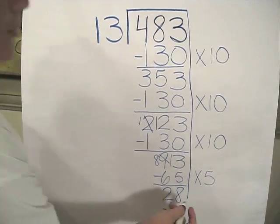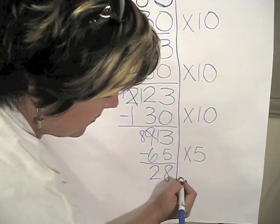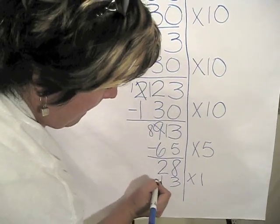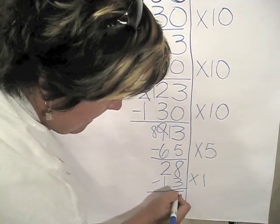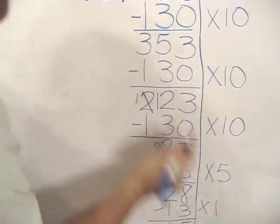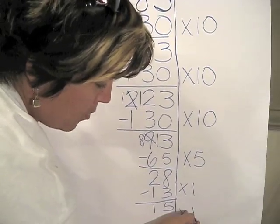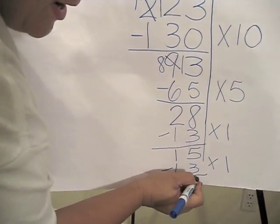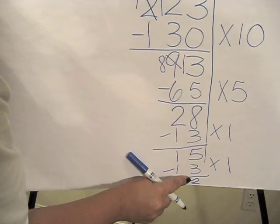I'm not sure, so I'm going to just do times 1. I have 15 left. That's enough to go in one more time. Times 1. I have 15 left, and I have 2 left over here at the bottom.